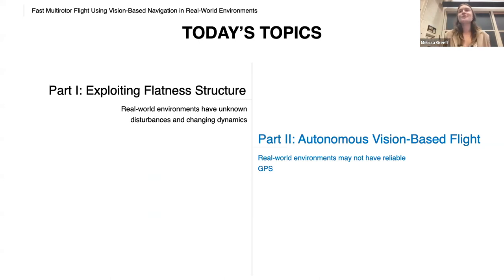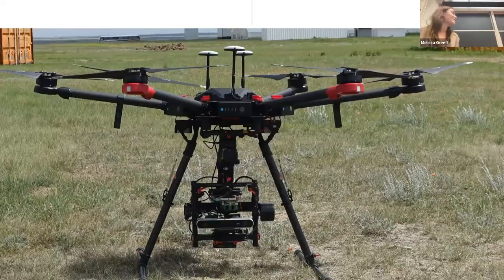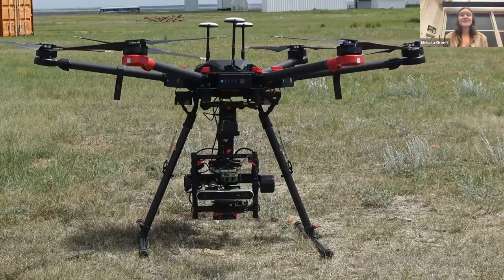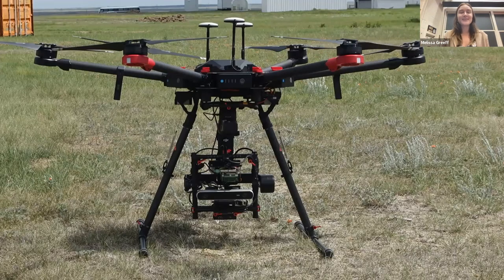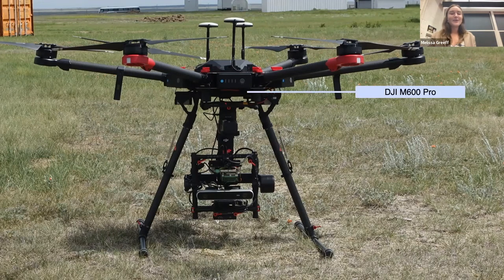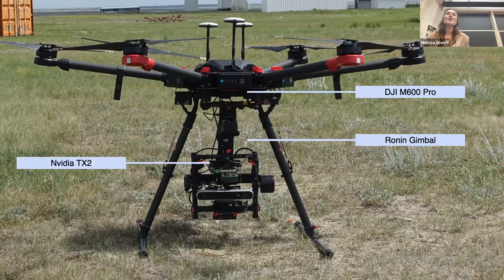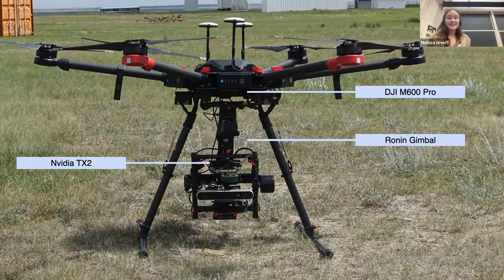Now on to part two, Autonomous Vision-Based Flight. Of course, I have to introduce our DJI M600 setup. Some of you might have seen it flying outside. This is our DJI M600 Pro, our Ronin gimbal or gimbaled camera. All computation is done on board on the NVIDIA TX2, and we use a stereo ZED ABS camera.